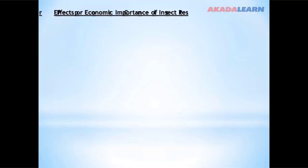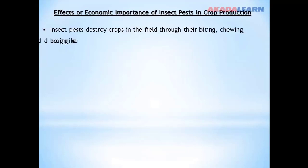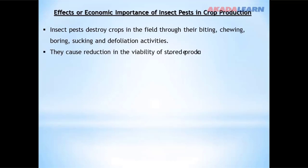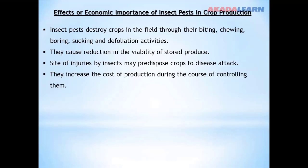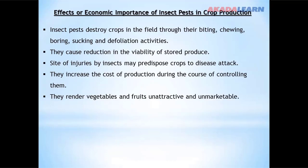Effects and economic importance of insect pests in crop production: insect pests destroy crops in the field through their biting, chewing, boring, sucking, and defoliation activities — defoliation being the removal of plant leaves. They cause reduction in the viability of stored produce. Sites of injuries by insects may predispose crops to disease attack. They increase the cost of production through the cost of controlling them. They also render vegetables and fruits unattractive and unmarketable.